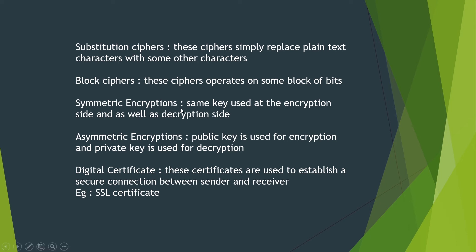Symmetric encryption uses the same key on both the encryption side and the decryption side. This key is the heart of the mathematical operation performed on the plain text, and with this key only the receiver can decrypt the message. A major advantage of symmetric encryption is that it is very fast for both encryption and decryption. However, the disadvantage is that if the key is seen or obtained by another person, they can use it for decryption, so the key must be securely delivered to the receiver.